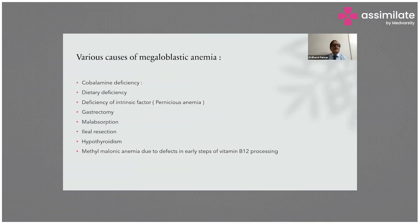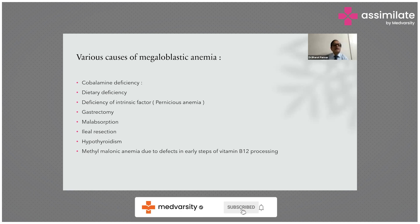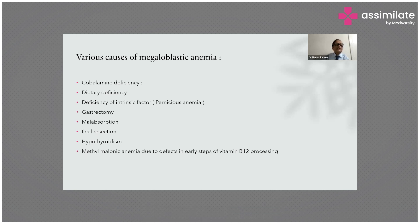Various causes of megaloblastic anemia. It is due to cobalamin deficiency, dietary deficiency, deficiency of intrinsic factor causing pernicious anemia, after gastrectomy, malabsorption, and after ileal resection. Megaloblastic anemia is also associated with hypothyroidism and methylmalonic anemia due to a defect in early steps of vitamin B12 processing. These are the various causes of megaloblastic anemia.